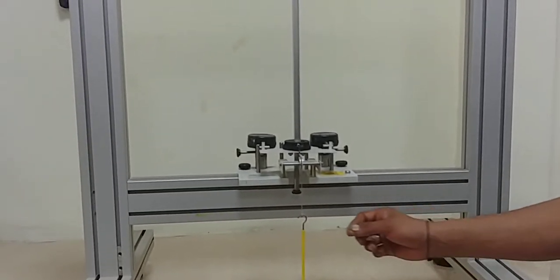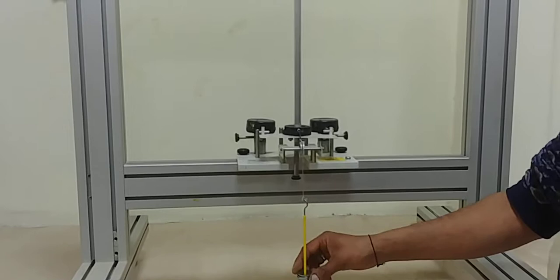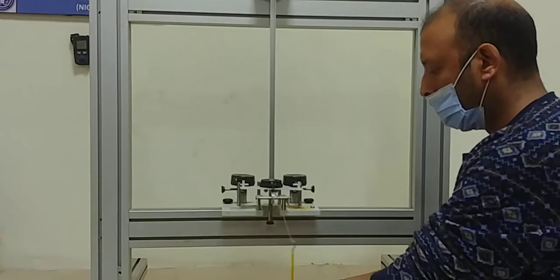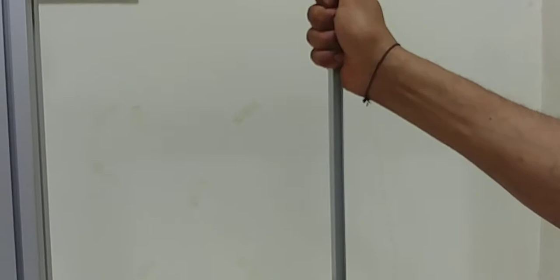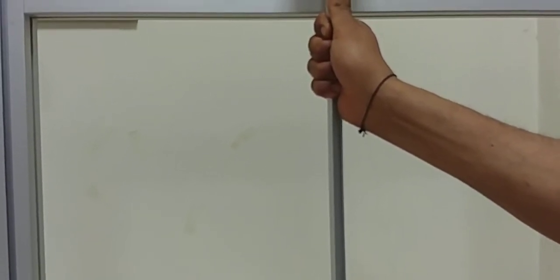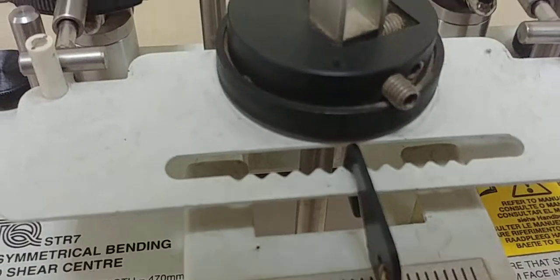Now we will unload this beam. After unloading, we will loosen the screws of this cantilever beam from the top and bottom and give it an angle increment of 22.5 degrees. That is how we change the angle. Now again we will fix the screws at top and bottom and apply the load in the same manner.